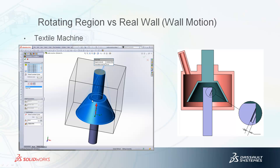Later on, when we're talking about rotating regions, a lot of times the impeller or fan is connected to some shaft. You can actually use the real wall option — in fact, this is the better way to do it. Apply an angular velocity to the shaft, and then use a local rotating region for the actual motion of the blades.